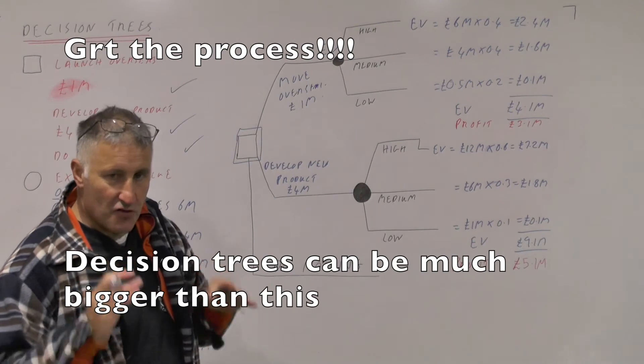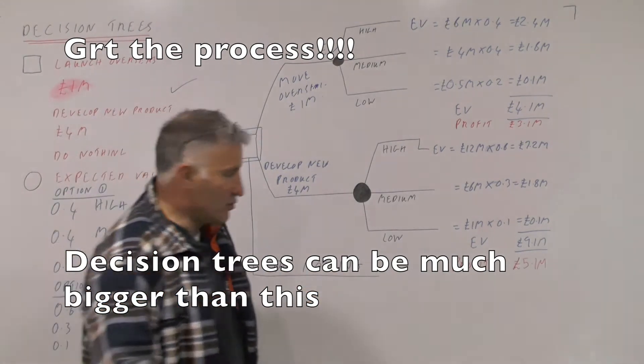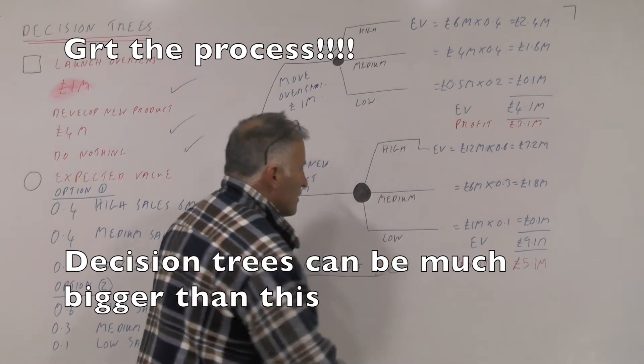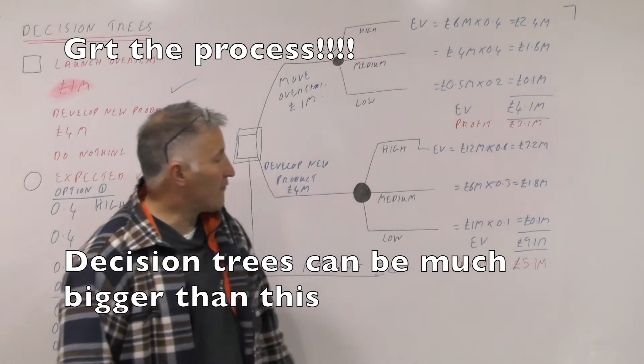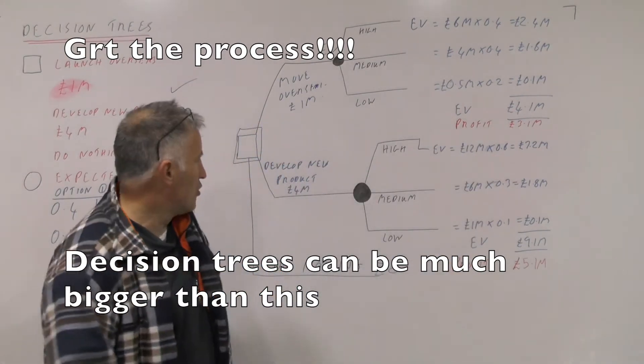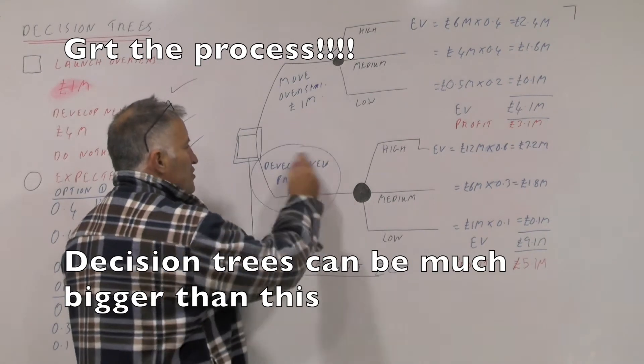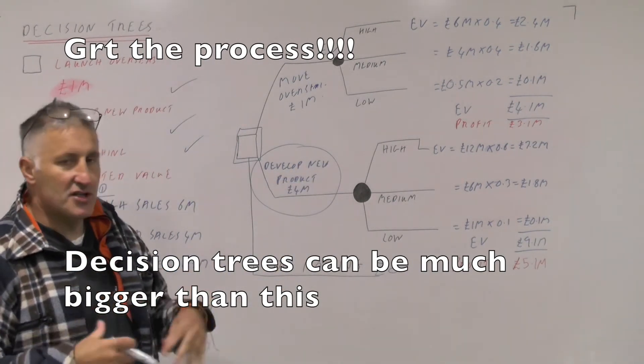Therefore, according to this model, because doing nothing will get you £0, if you develop a new product on average you're going to get £5.1 million, and here you'd only make £3.1 million. So the choice that you would definitely go for is you would in fact develop a new product. This is using a decision tree to help you make a decision.